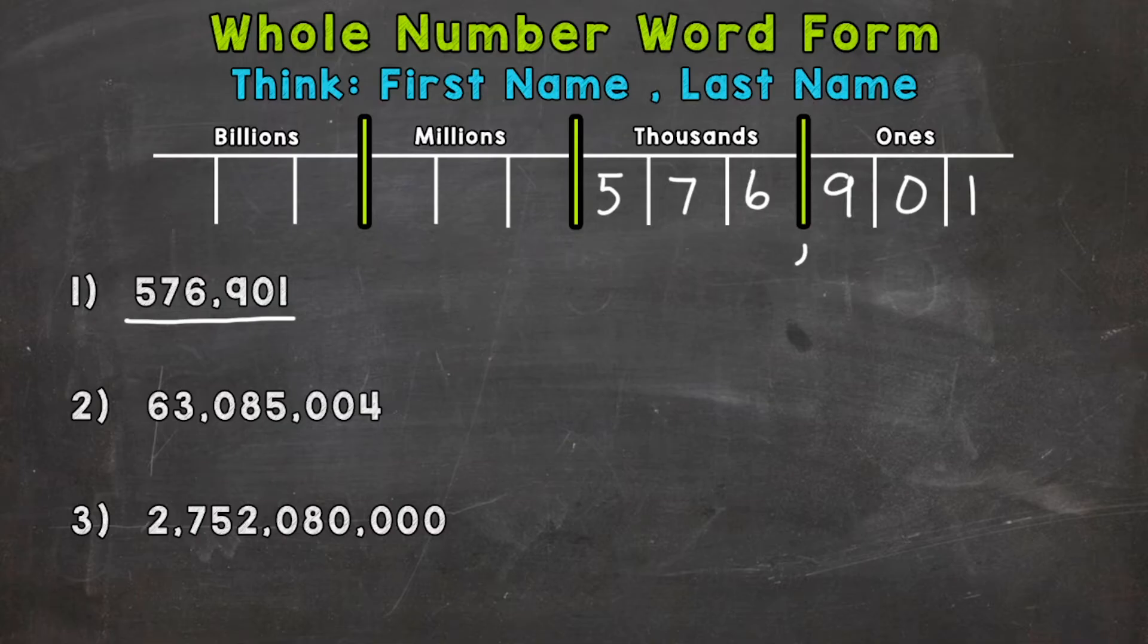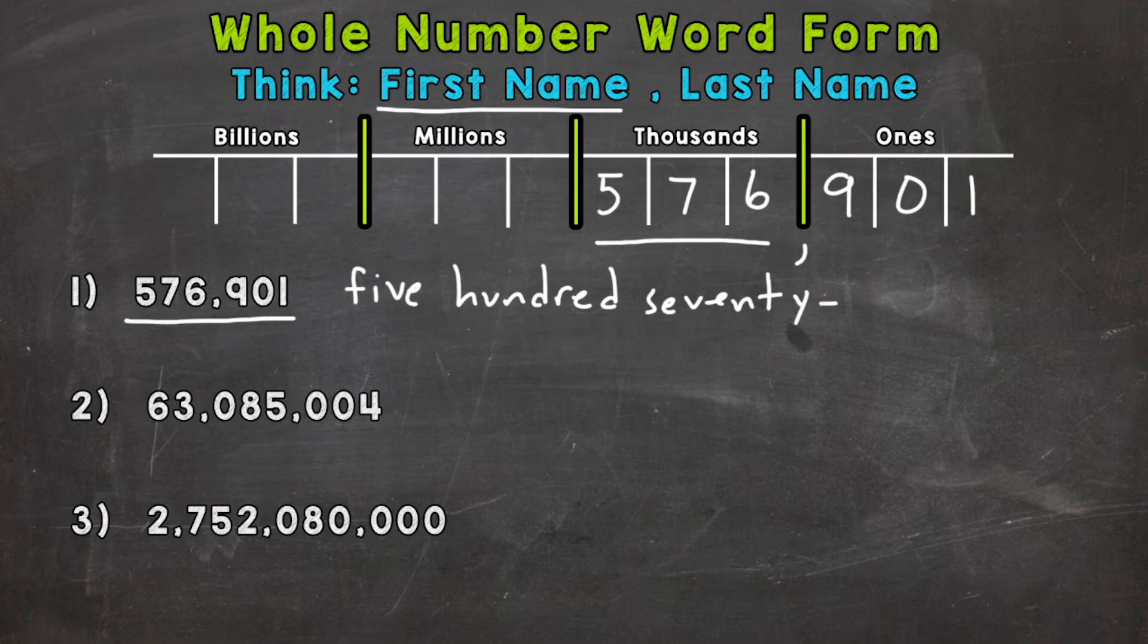So let's talk about first name, last name. And we want to take a look at this section here and read that number as is. That's going to be our first name. So 576. First name, five hundred seventy-six.